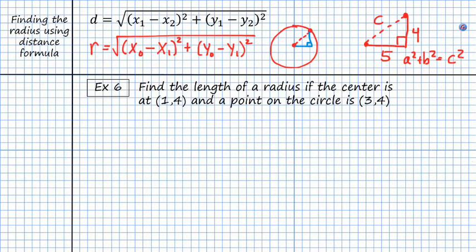Alright so let's take a look at the example. In example 6 we're given that our center is at 1 comma 4 and the point on the circle is 3 comma 4. So we'll go ahead and plug it into our formula. We're looking for radius equals the square root of, my center x value is 1 so we say 1 minus, and then I'm going to fill this, plus my center y value will be 4 and we'll say minus.